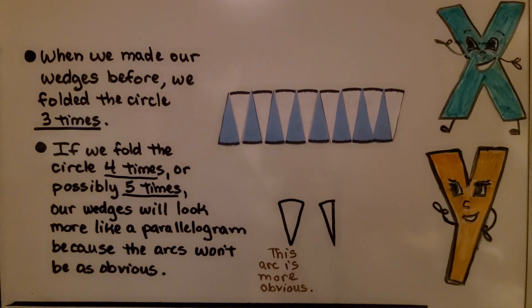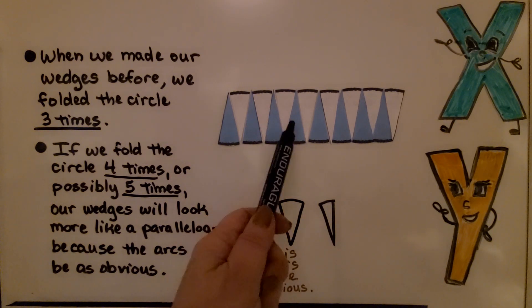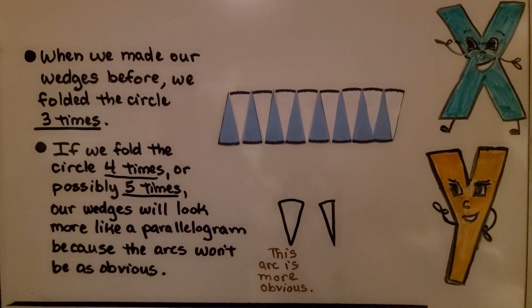When we made our wedges before, we folded the circle three times. If we fold the circle four times, or possibly five times, our wedge will look more like a parallelogram, because the arcs won't be as obvious. Before, if our wedge was this big, you could see the arc.